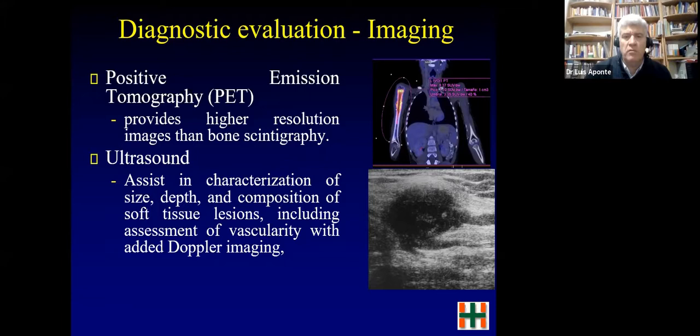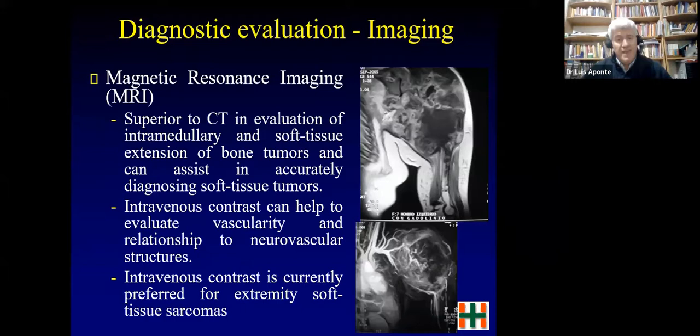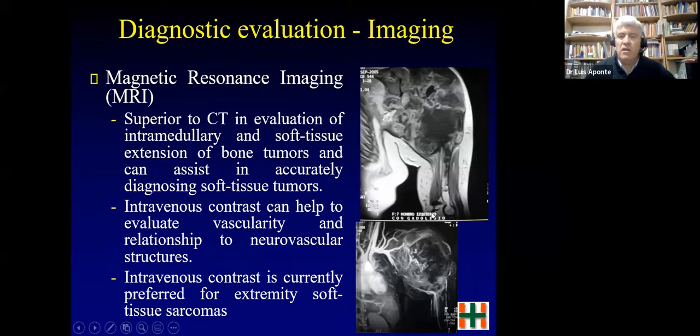The gold standard imaging is MRI. Never forget the X-ray, because MRI shows the extent of soft tissue involvement and the extent of bone tumor within the medullary canal. Contrast can be used, and MRI is used for both soft tissue and bone sarcomas. It is very important.